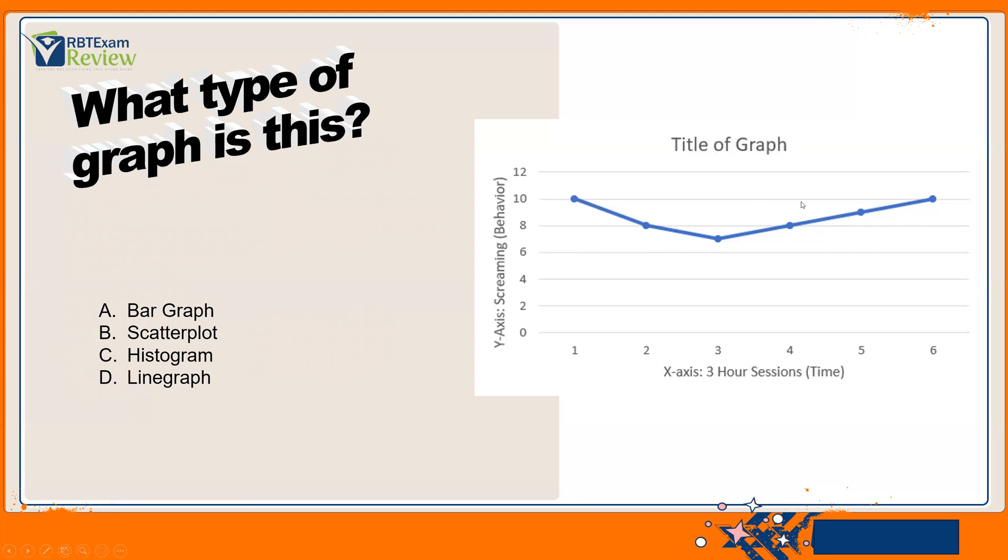And then, again, what type of graph is this? What is the most common graph we use in ABA? Is it a bar graph, a scatterplot, histogram, or a line graph? Well, it is a line graph. It's the most common form of graph in ABA. Okay, that's all there is to it.